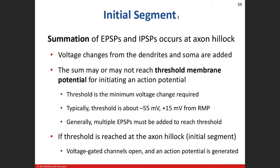Those are what we call graded potentials. Graded potentials only occur in the receptive segments of the neuron — that includes the cell body and the dendrites. In addition to having the leak channels there and the sodium-potassium ion pumps, we have chemically-gated channels, including chemically-gated sodium, potassium, and chloride channels. Our whole goal is to eventually create an action potential, which can only start in the initial segment. We have to get to our threshold value.